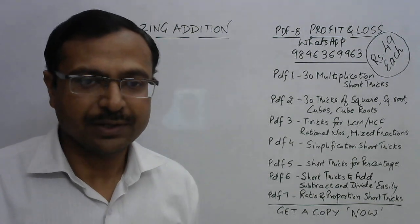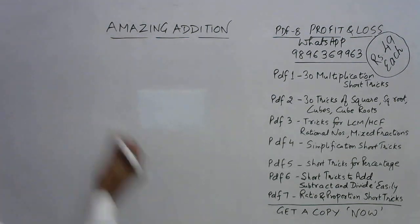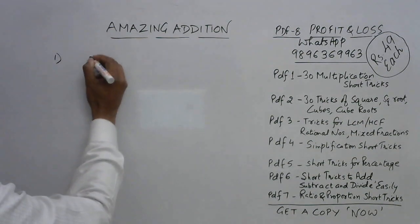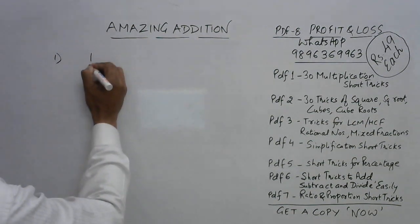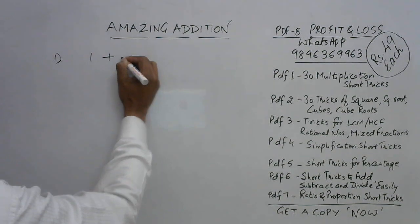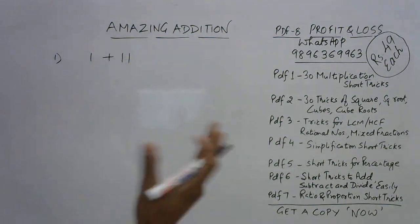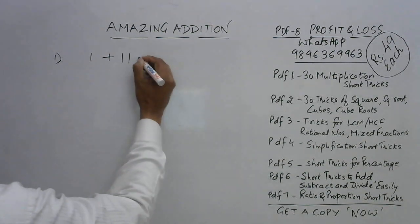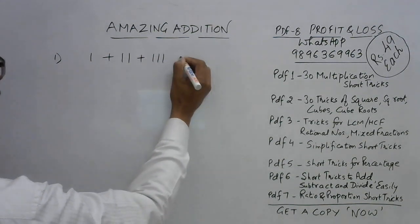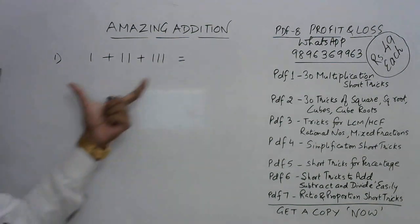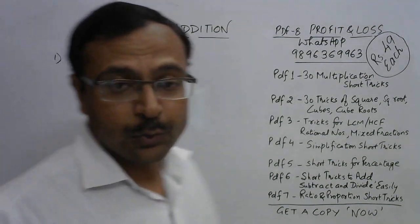So let's take an example and understand what the trick is. The first problem which I am going to take up has repeated ones, like we start from 1 and then we keep increasing one digit but everything will be 1 only. So 1 + 11 + 111.